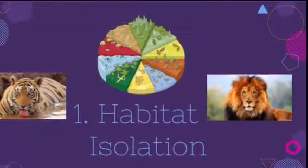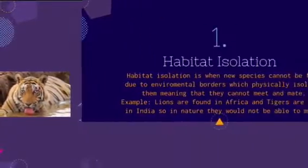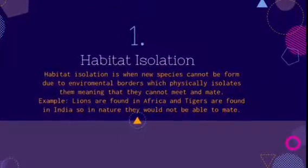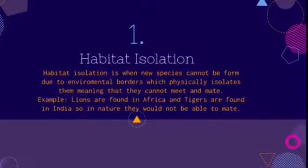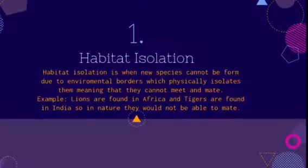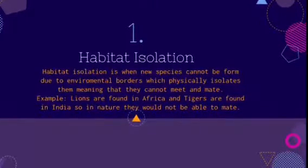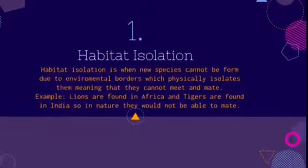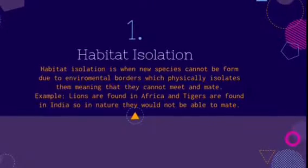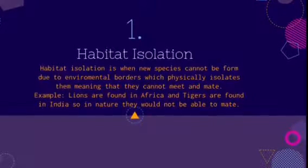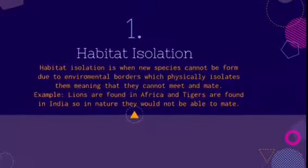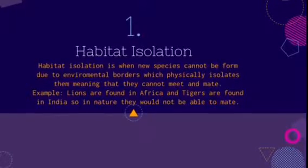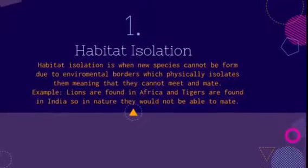Habitat isolation is when new species cannot be formed due to environmental borders, which physically isolates them, meaning that they cannot meet and mate. An example of this would be lions, as they are found in Africa and tigers are found in India, so in nature they would not be able to mate.